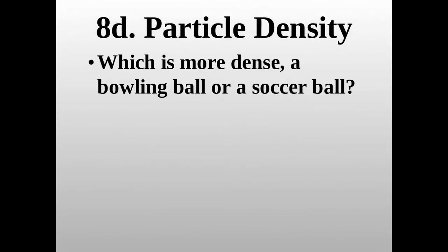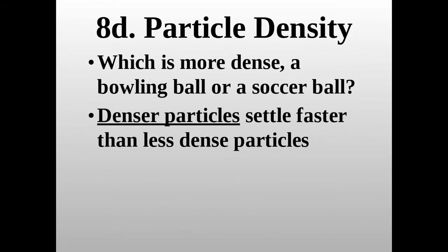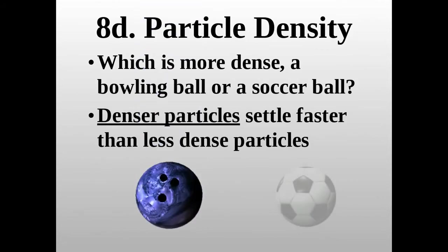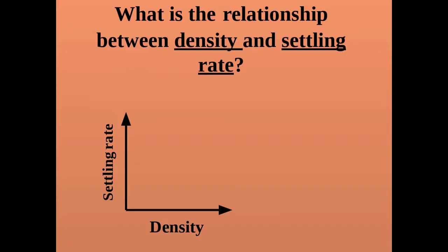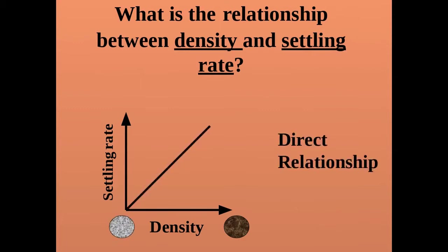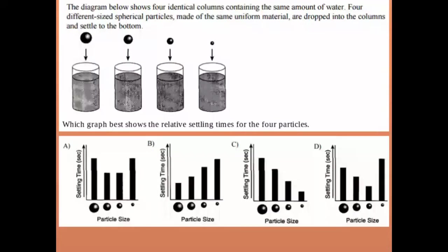Particle density is item 8d. A bowling ball is denser than a soccer ball. Denser particles settle faster than less dense particles. As density increases, the rate at which a particle settles also increases — a direct relationship.